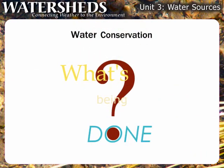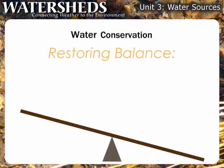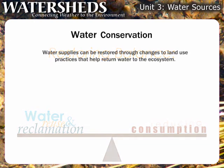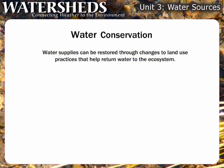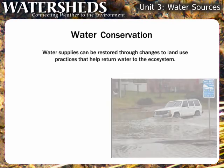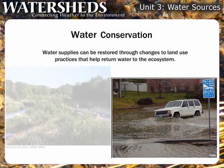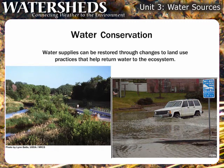What is being done to help balance water needs in our country? Restoring balance is accomplished through two main avenues: one, water reuse and reclamation; and two, reducing consumption. Water supplies can be restored through changes to land use practices that help return water to the ecosystem. For example, pavement, soil compaction, and vegetation removal cause precipitation to run off instead of percolate into the soil to recharge groundwater aquifers. Different materials and land use practices can help capture and store more runoff. Communities can help by protecting critical watersheds and drinking water sources when approving new land uses, by preserving natural areas, and by taking steps to minimize the impacts of new construction on the environment.